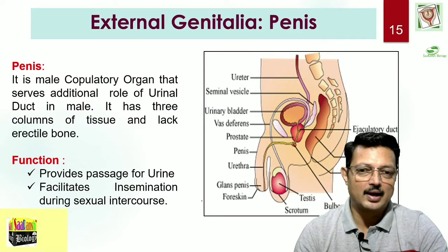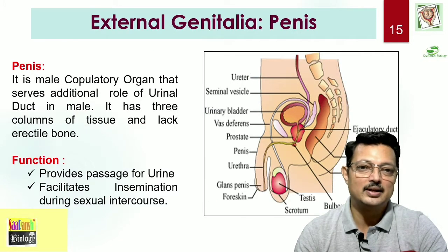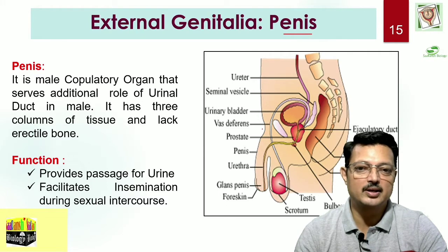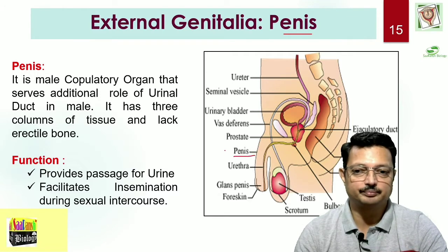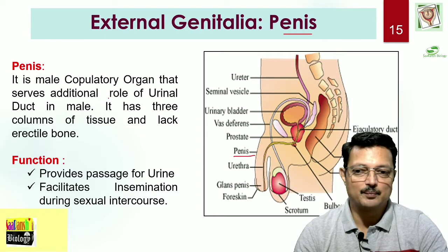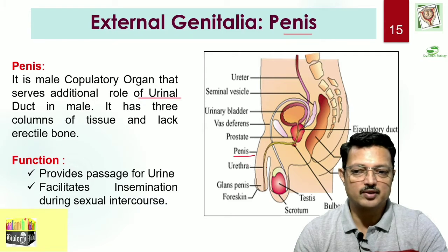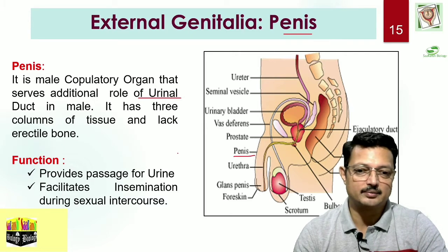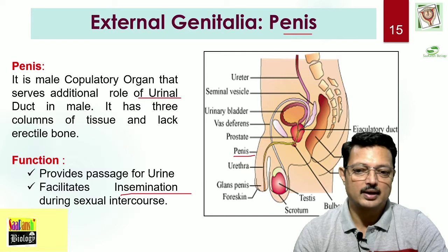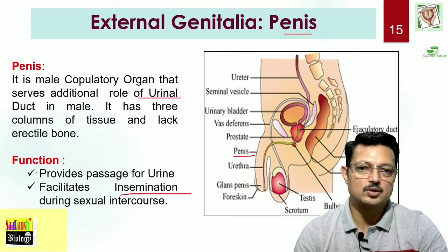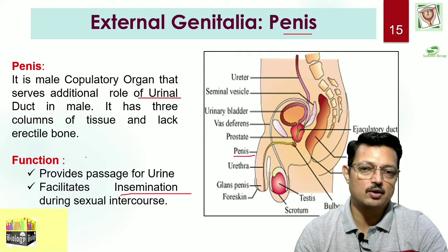Now we talk about the external genitalia, which delivers or inseminates — or transfers — the sperm or semen into the female reproductive tract. This is the penis, a muscular structure that serves a dual function: it also serves the role of urinal duct. It is made up of columns of tissues and there is no erectile bone inside. During copulation it facilitates insemination and also serves as the passage for urine.